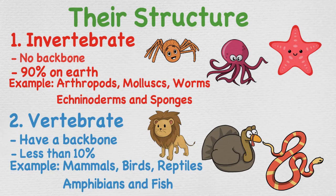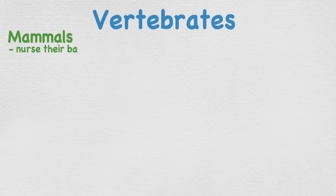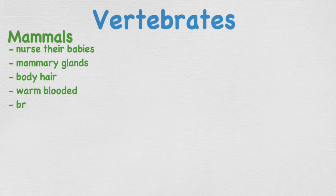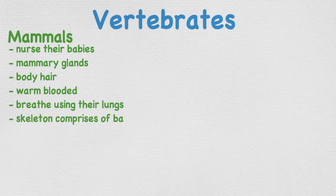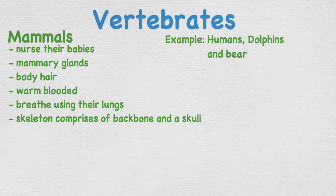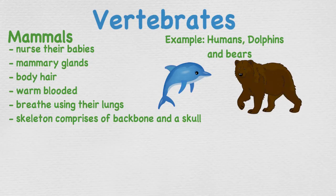Mammals nurse their babies with milk produced by their mammary glands. They have body hair, are warm-blooded, breathe through their lungs, and have a skeleton that comprises a backbone and a skull. Examples include humans, dolphins, and bears.